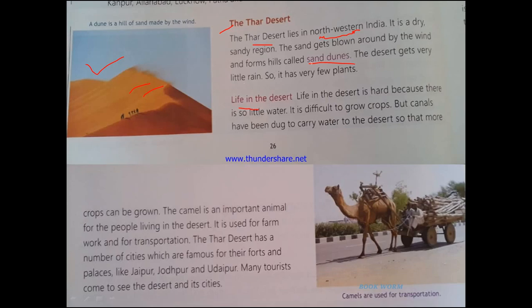Due to very little water found in the desert, it is very difficult for people to live there, and hence crops cannot be grown easily. But canals have been dug to carry water to the desert so more crops can be grown. Canals are like streams — similar to rivers but man-made. The government sanctions canals to be built from rivers to carry water to the driest areas of the desert region, so that people can get water and crops can be harvested.